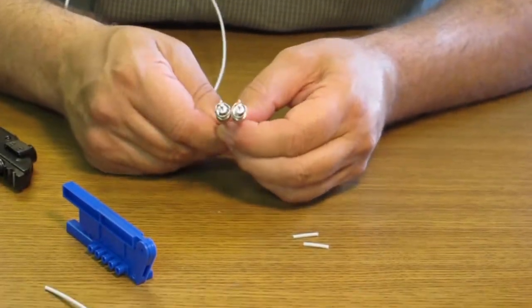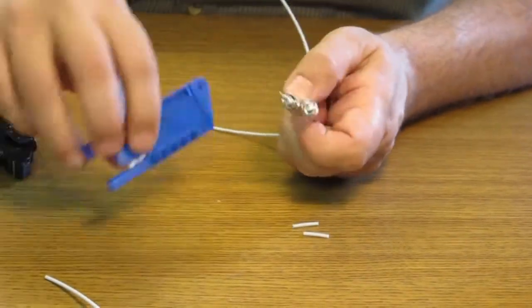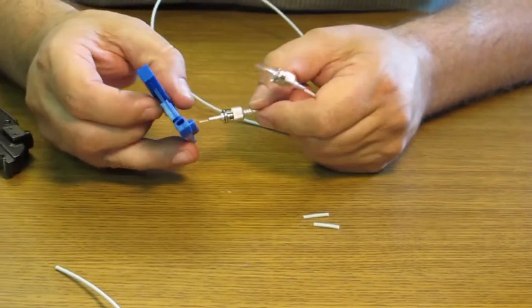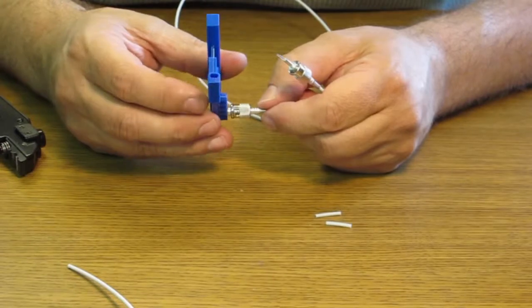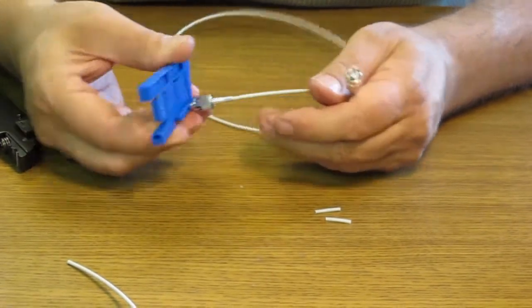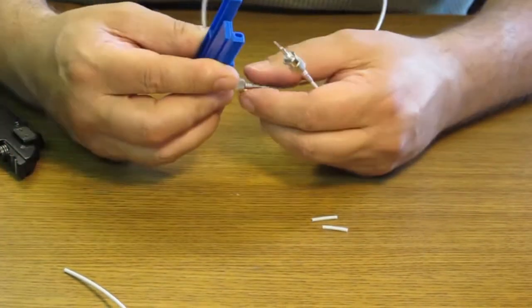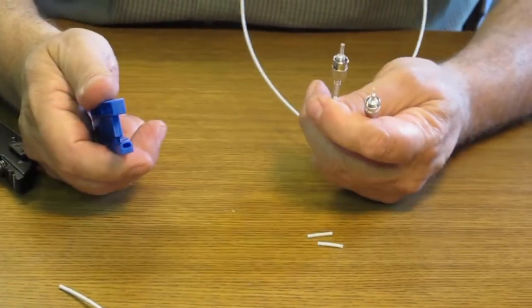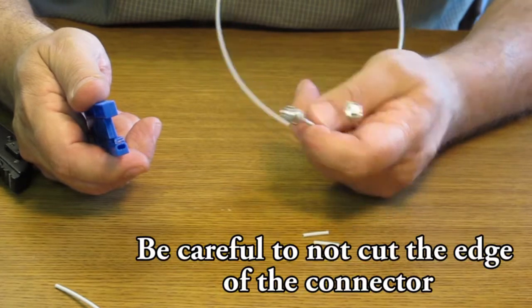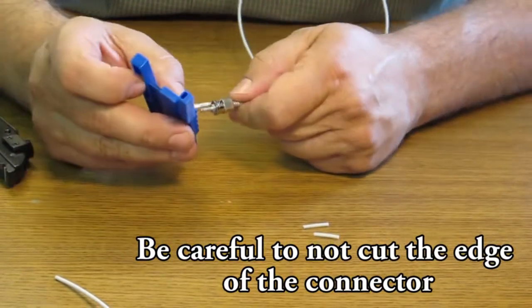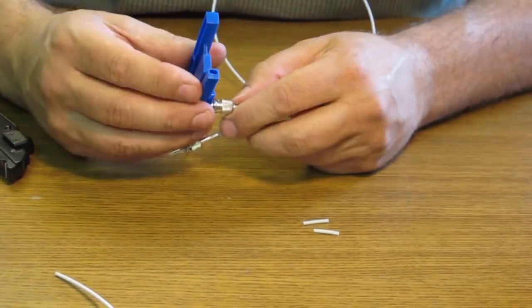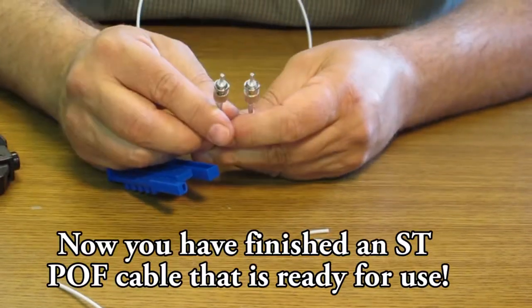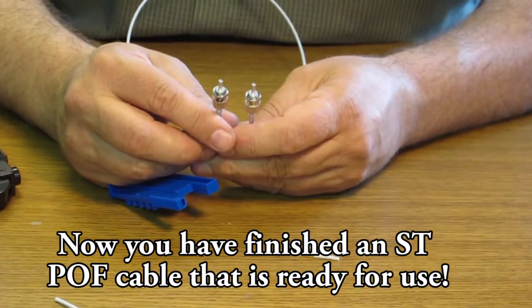Now both connectors are ready for termination. Using the FiberFin tool you are going to want to put the fiber into the hole, feeling the end of the connector against the razor blade. Close the razor blade and now you have a terminated cable. You want to repeat the same thing on the other side. Now you have two cables that are ready for termination.